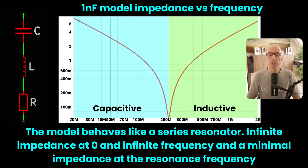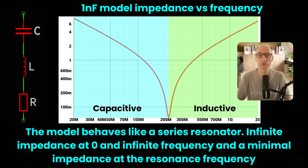Another key understanding is the behavior versus frequency. Below the resonance frequency, this model behaves like a capacitor. Exactly at the resonance frequency, the inductor and capacitor cancel each other out completely, and the model behaves like a perfect resistor. Above the resonance frequency, the model behaves like an inductor. It only behaves like an inductor — the impedance increases with frequency — but it won't short your supply, and it will still be a good decoupling device since the impedance is very low because the inductance is very low.